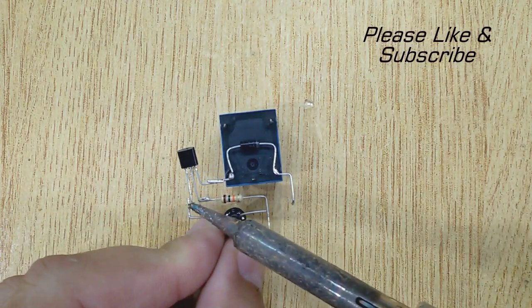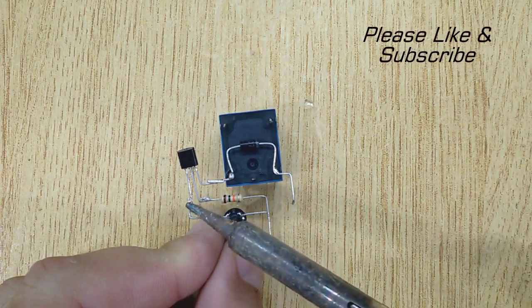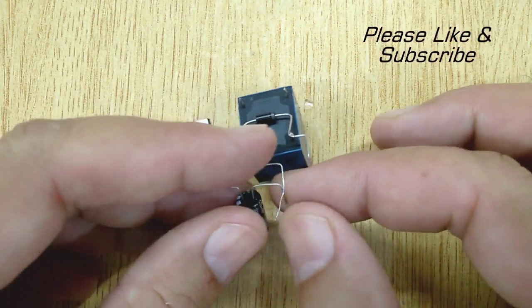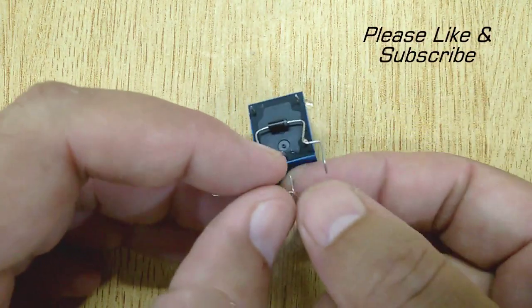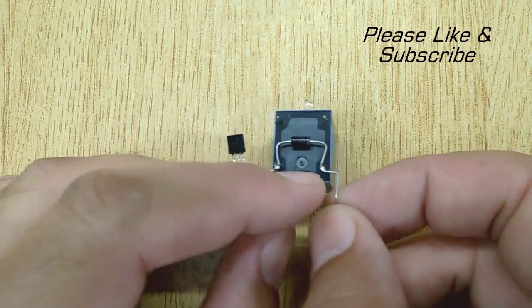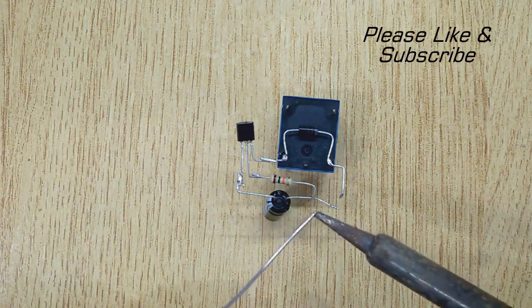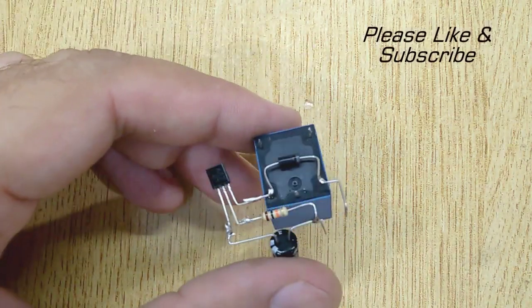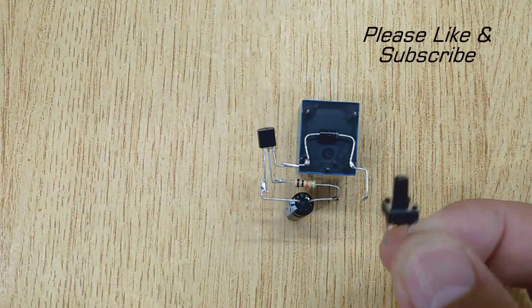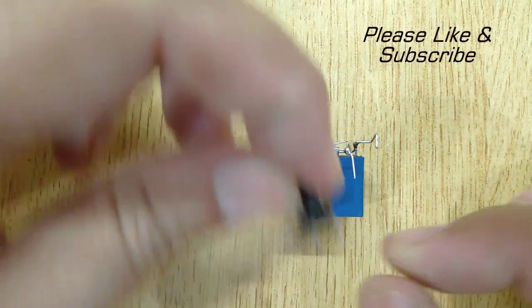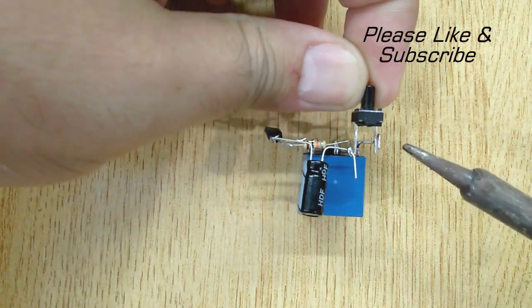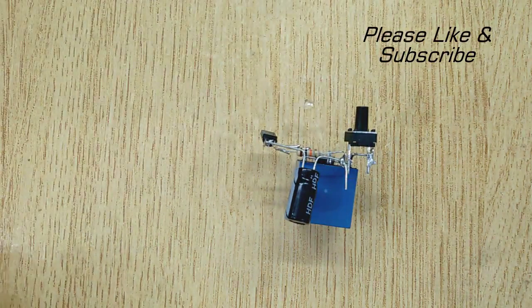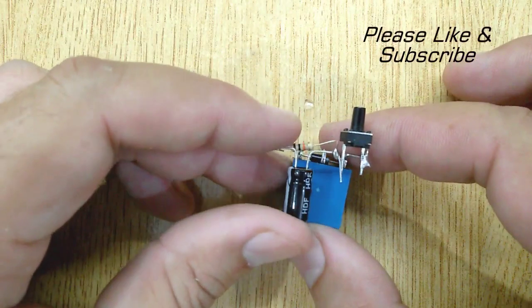Then solder the negative pin of 330uF capacitor with the emitter of transistor. Then solder the positive pin of capacitor with the resistor. And at last solder one pin of microtouch switch with the second pin of relay and the other pin of microtouch switch with the resistor and capacitor.